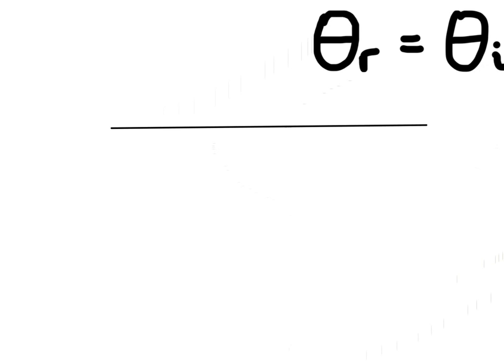This brings us to a ray diagram. A ray diagram takes a cross-section of a mirror — this could be the top view — and shows how the ray of light comes in, hits the mirror, and bounces off. One thing we add to our mirror is a perpendicular dashed line right in the center, and this is called the normal line.